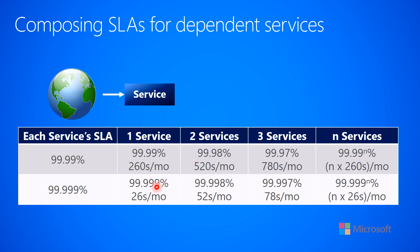If you want to try to offer 99.999% uptime for your service, that is equivalent to your service being down no more than 26 seconds per month. Running multiple instances of this service greatly helps increase the chance of you meeting any service level agreement that you're trying to offer to customers.